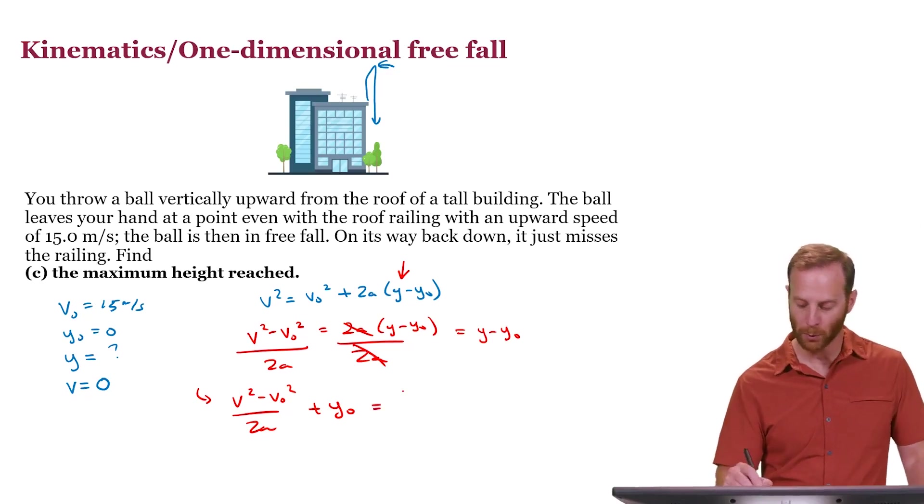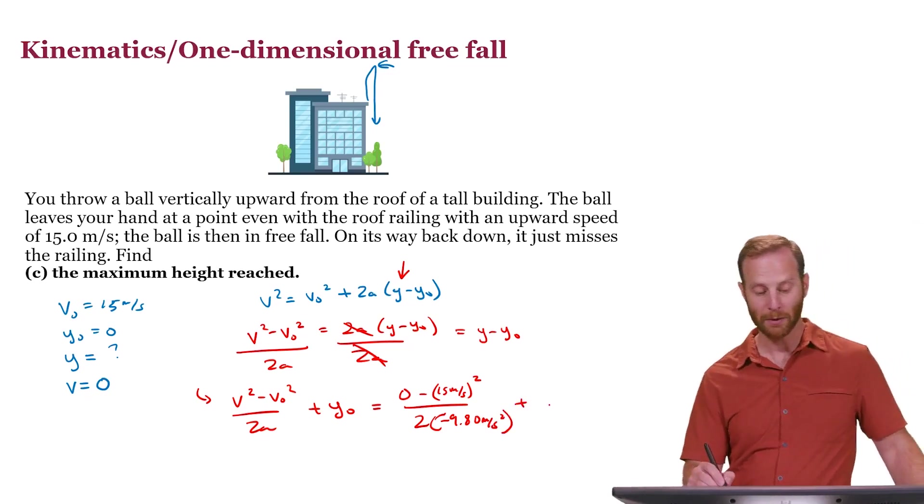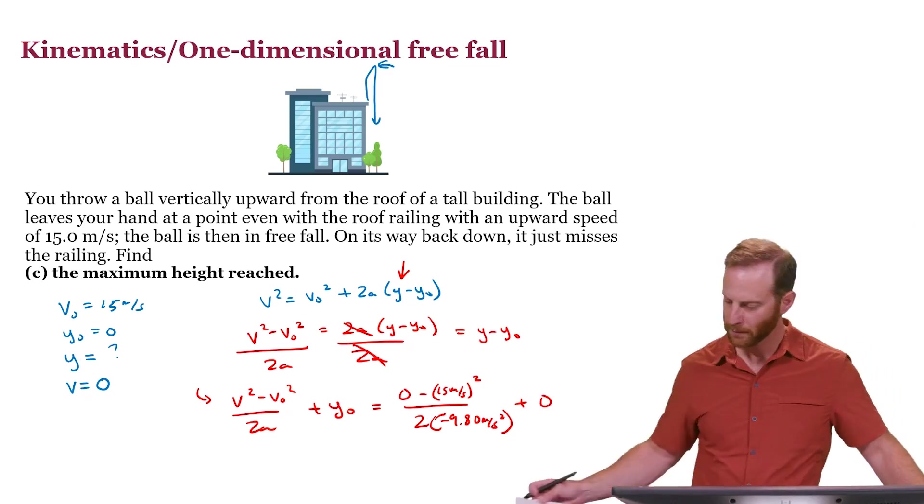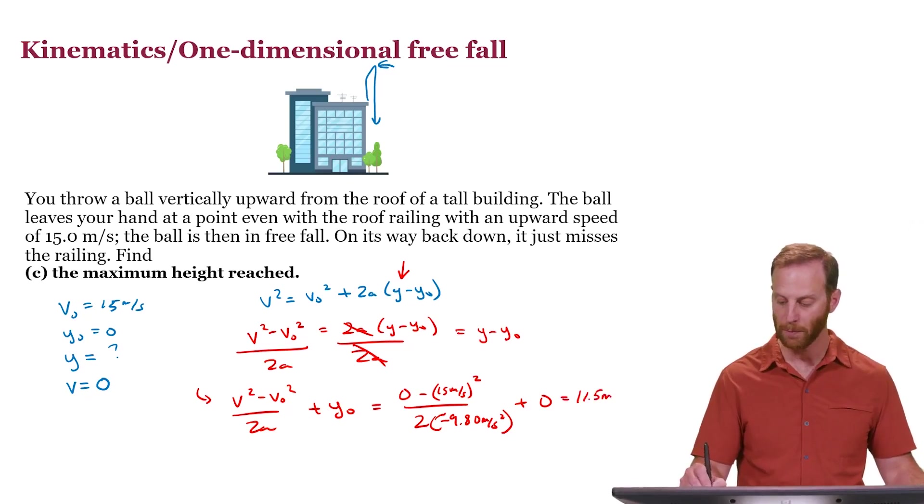When you plug in the numbers, we've got zero. We've got minus 15 meters per second. That quantity is squared divided by 2 and divided by g, negative g, which is that negative quantity. To that, we're going to have to add Y0, which is zero. And as you would find, this would give you a positive value, 11.5 meters. That would be your Y value. That would be, therefore, the maximum height.